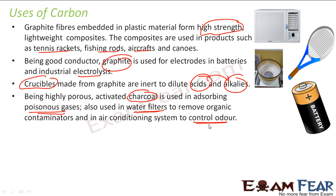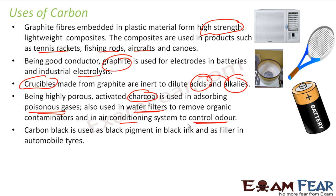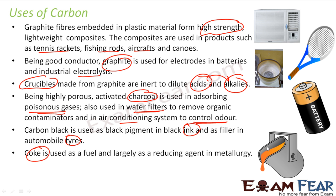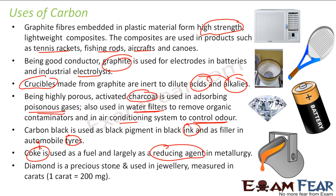Charcoal is also used in air conditioners because it can control bad smell. Carbon black is used in ink and also in tires. Coke is used in metallurgy a lot as a reducing agent because it is very cheap, and in the industry you want to produce things at a cheaper rate.